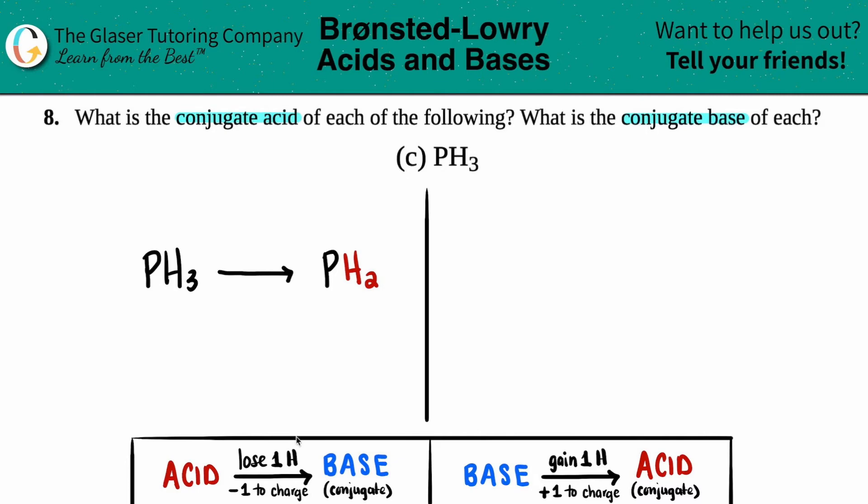Now you just have to account for the charge. When you're losing a hydrogen, you subtract one from the overall charge that you started with. But when I look at PH3, there was no charge in the upper right-hand corner. That means that it was a zero. So when I come over here, I say okay, it was a zero. But since I lost the hydrogen, I got a minus one.